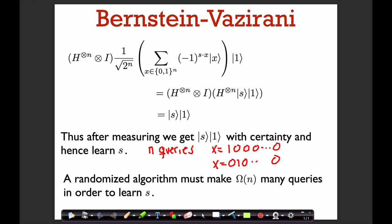So that's the Bernstein-Vazirani algorithm. To summarize: it's a problem that can be solved with one quantum query, and even a randomized algorithm takes Ω(n) queries to solve it. So now we're getting a separation even between quantum algorithms and classical randomized algorithms.